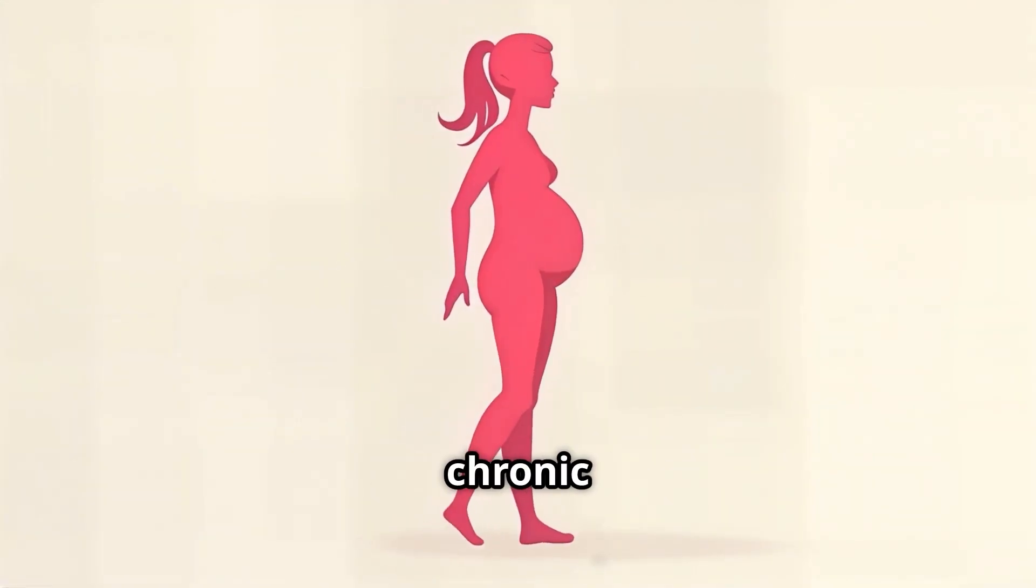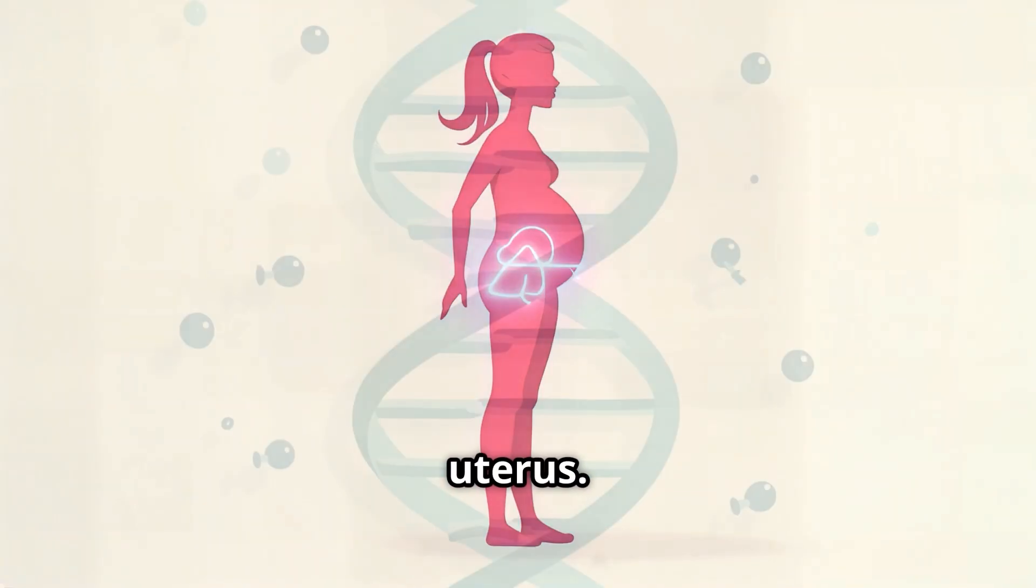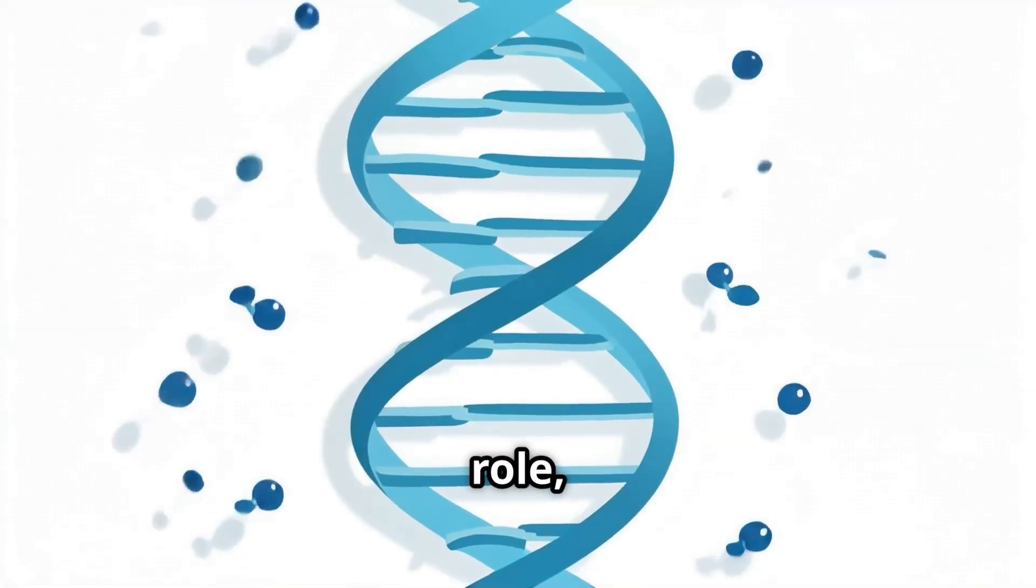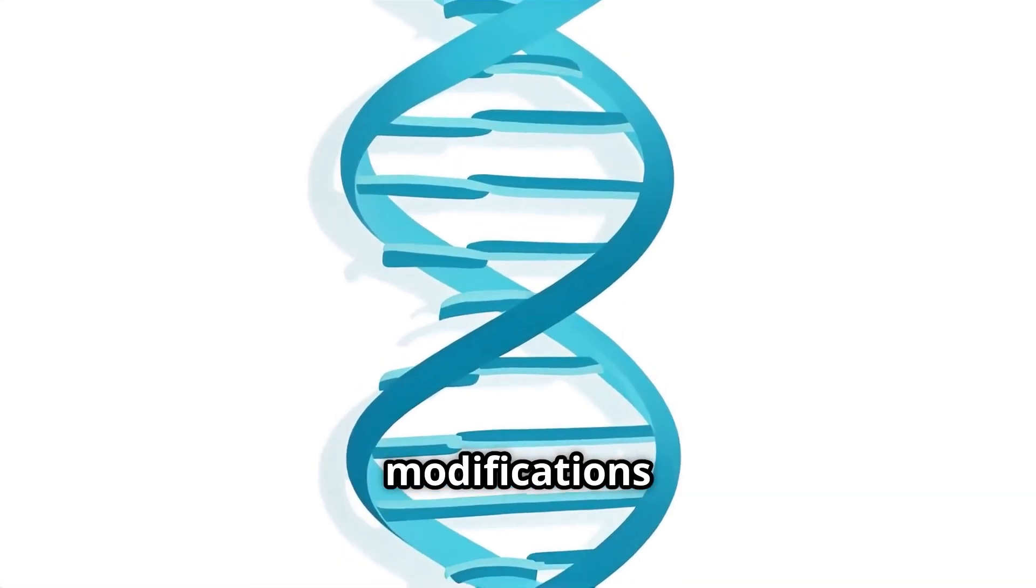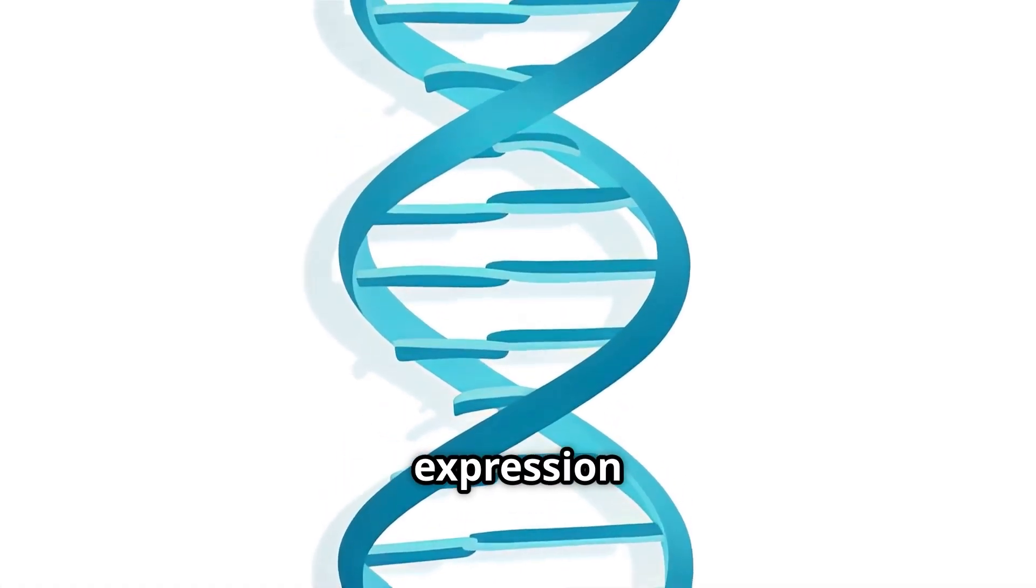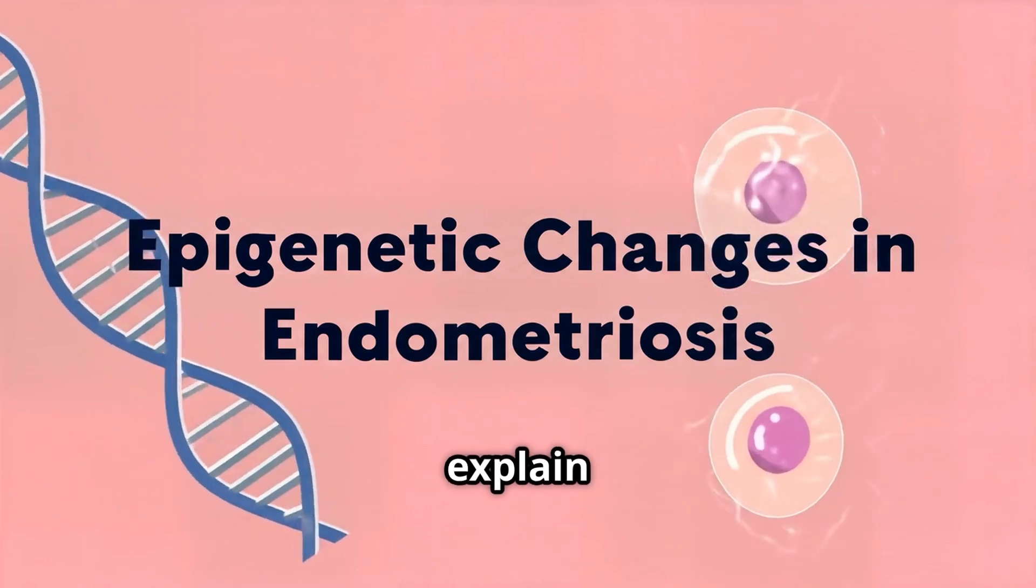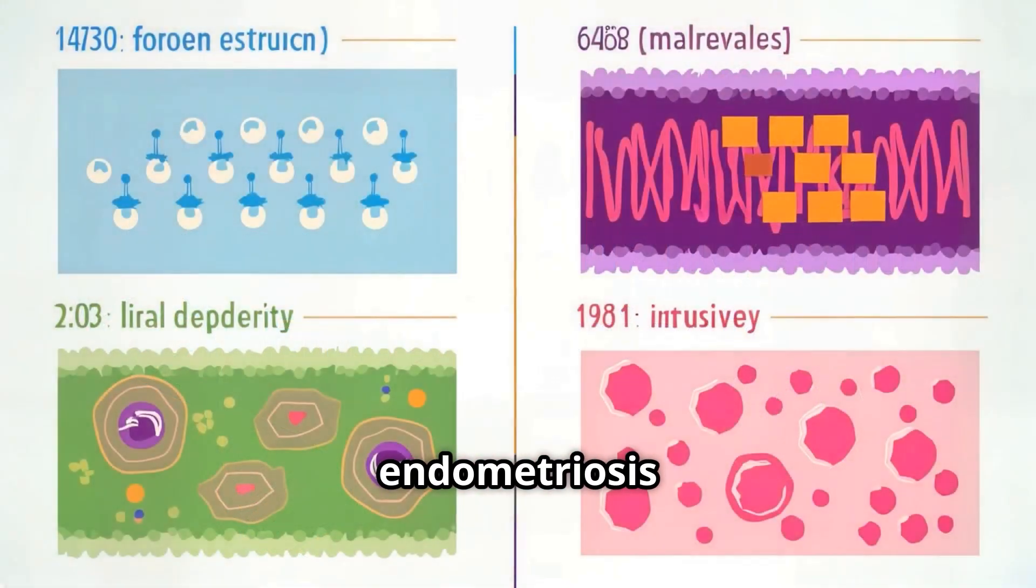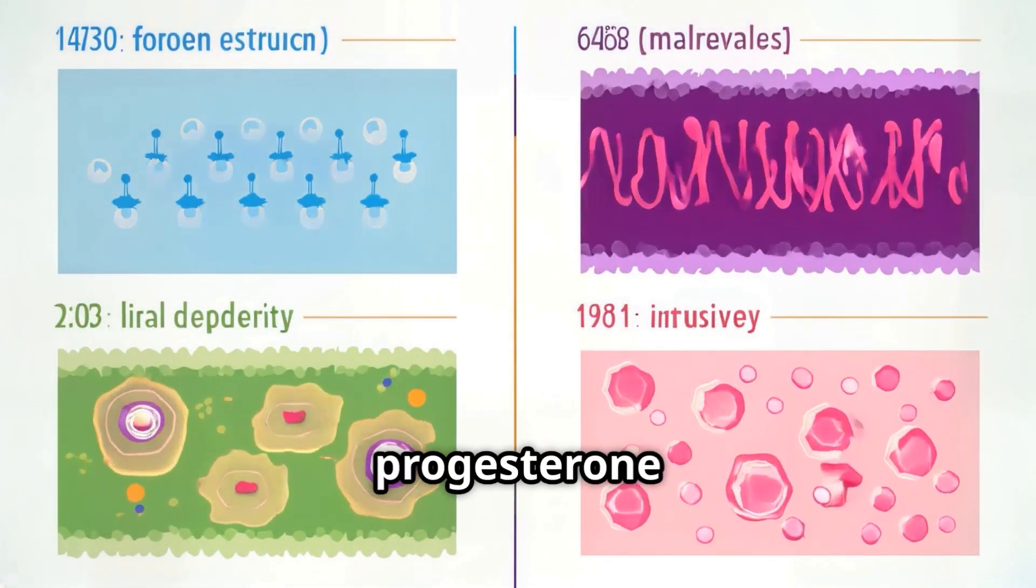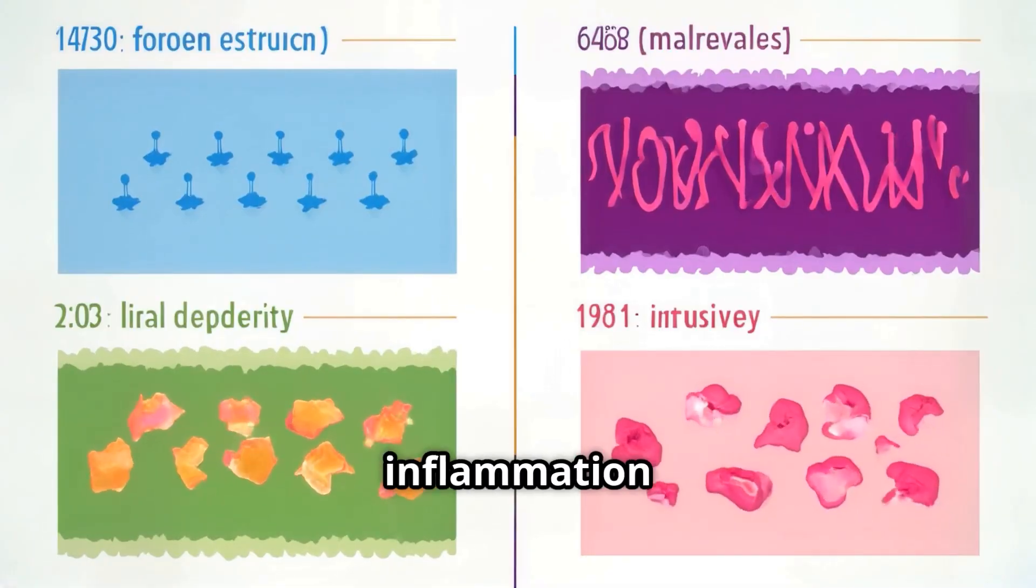Endometriosis is a chronic condition where tissue similar to the uterine lining grows outside the uterus. While genetics play a role, epigenetic modifications are crucial in altering gene expression without changing the underlying DNA sequence. These epigenetic changes help explain key features of endometriosis such as estrogen dominance, progesterone resistance, chronic inflammation, and invasive endometriotic lesion behavior.